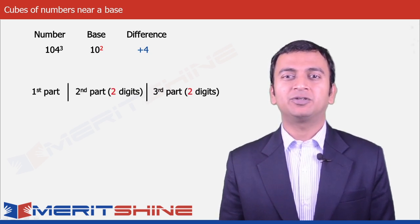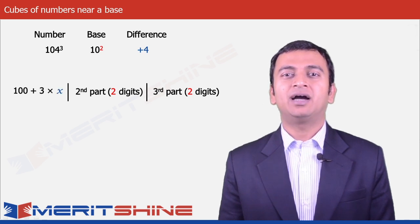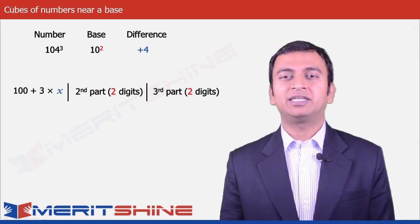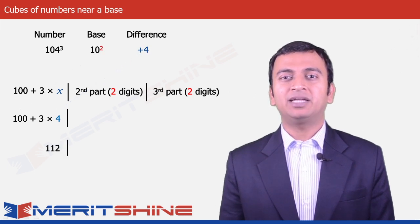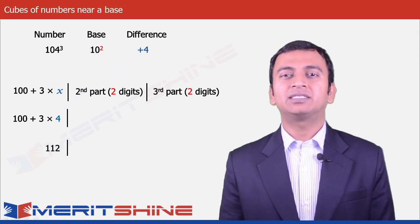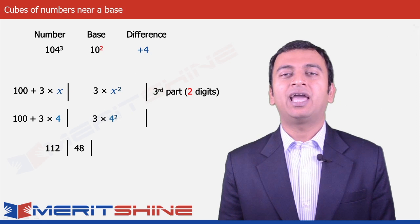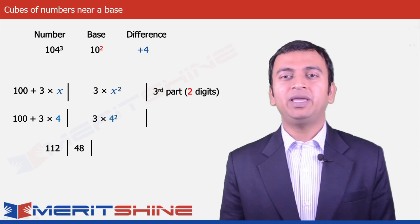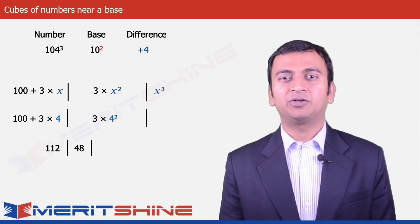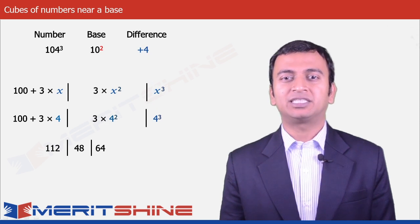The first part would be 100 plus 3x, which would be 100 plus 3 times 4, making it 112. The second part would be 3x², which gives us 3 times 4² = 3 × 16 = 48. And the third part would be x³, which in our case is 4³, giving us 64.